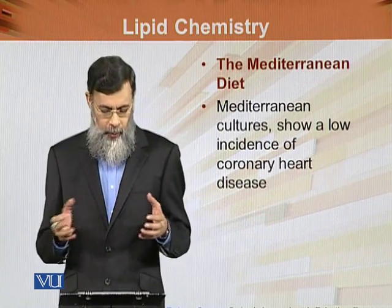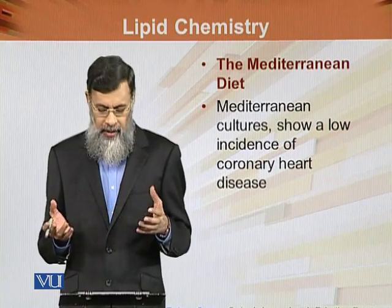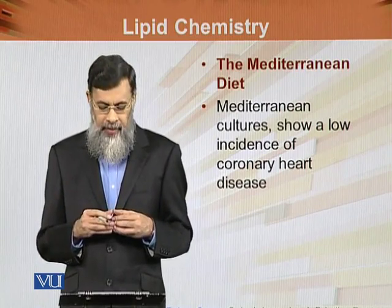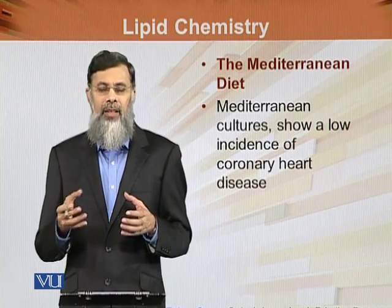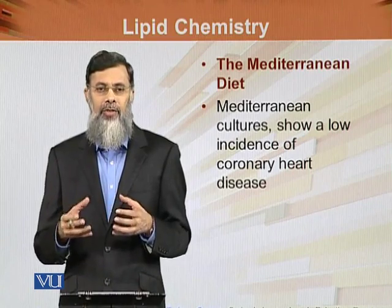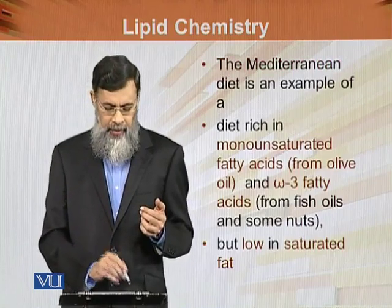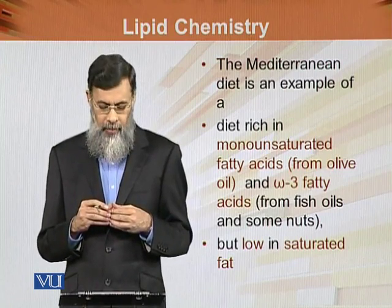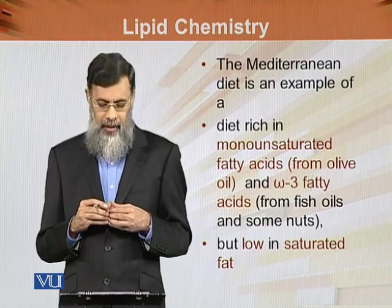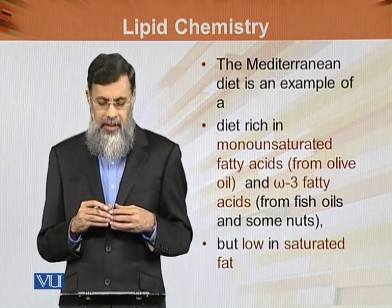The Mediterranean region includes Spain, France, Italy, Albania, Tunisia, Syria, Lebanon, Palestine, and Egypt. These Mediterranean cultures show a low incidence of coronary heart disease because monounsaturated fatty acids from olives are a major part of their normal diet. The Mediterranean diet is rich in MUFAs from olive oil, omega-3 fatty acids from fish oils and some nuts, but not in saturated fats.